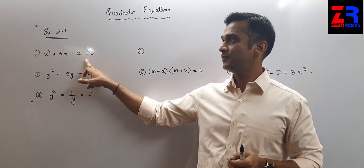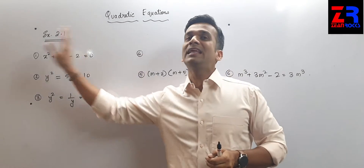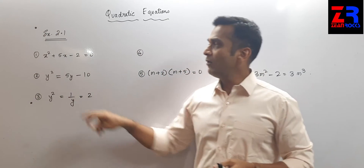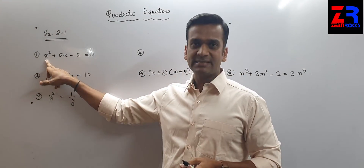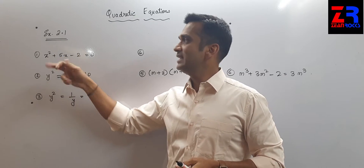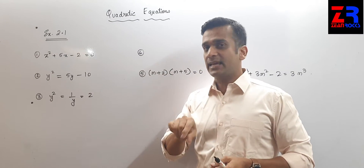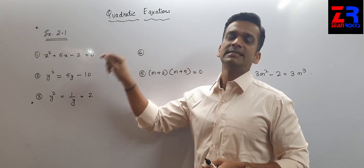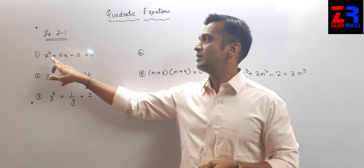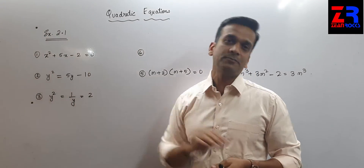For example, in the first question, all three terms are on the left-hand side. On the right-hand side there is a 0. The highest power of the variable x is 2. That is why I can directly say that this equation is a quadratic equation because the power is 2, and there is no need to solve further since all terms are on the left-hand side.